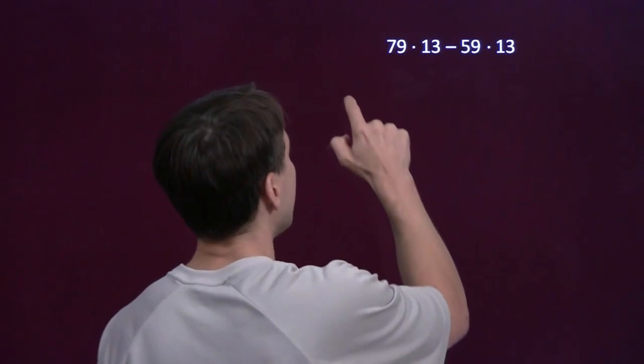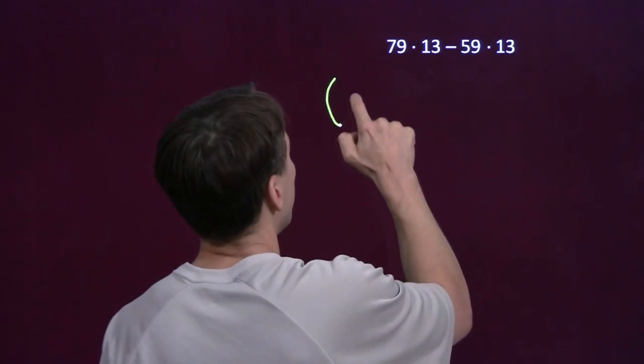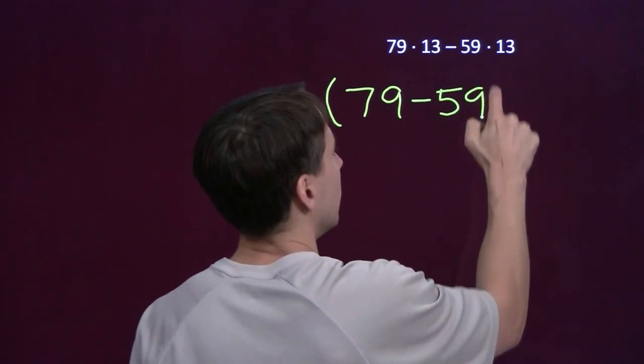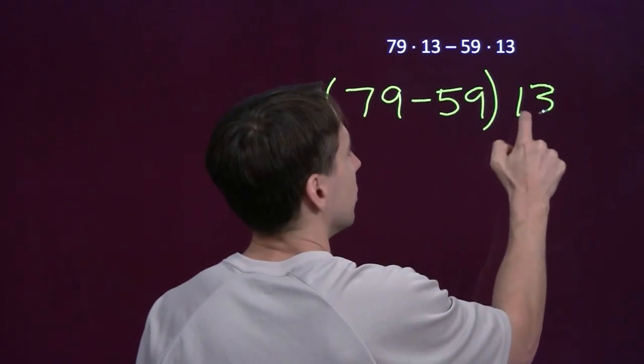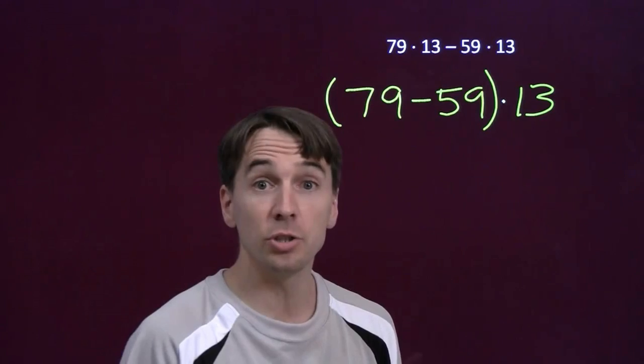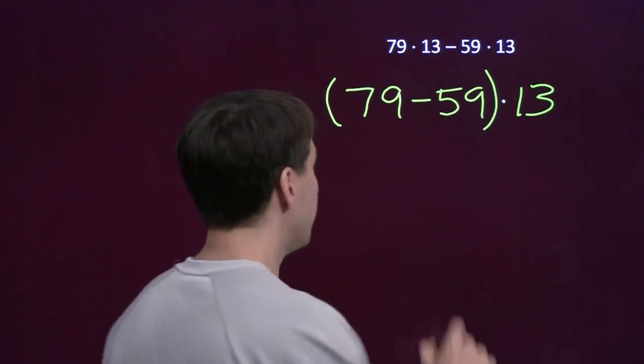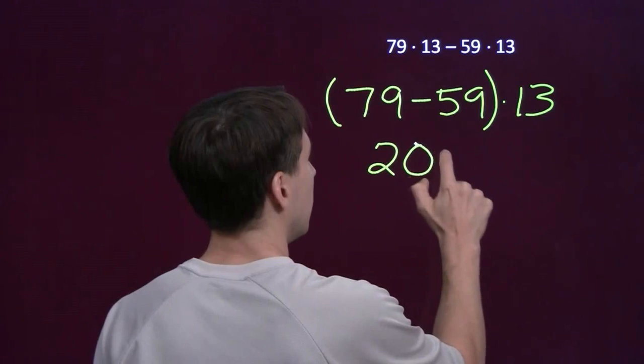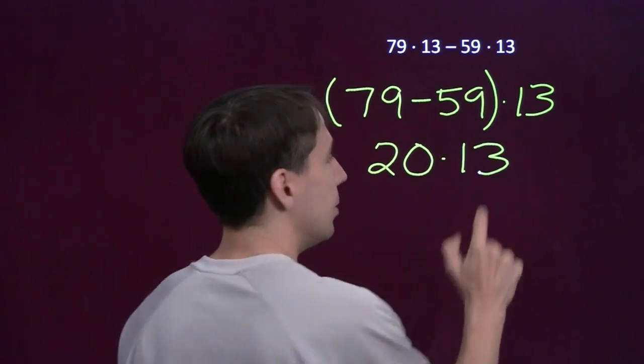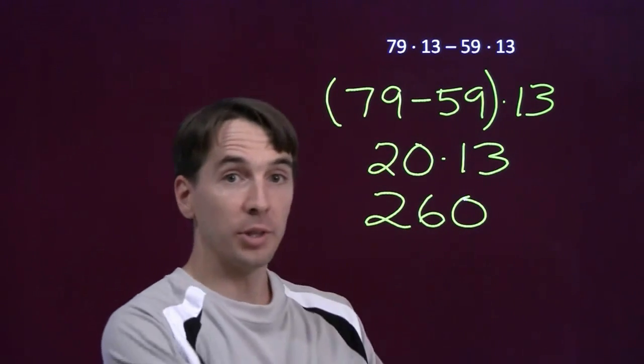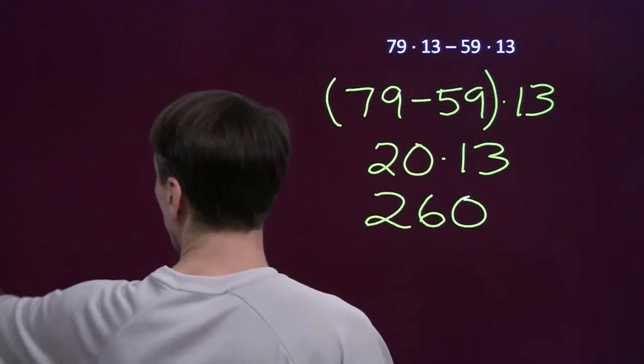Thirteen's in both of them. We can use the distributive property. We can factor out the thirteen. We can take out that thirteen and write this as seventy-nine minus fifty-nine times thirteen. And all we're doing there is using the distributive property. We're factoring out the thirteen. Seventy-nine minus fifty-nine, well, that's twenty. So our problem is now twenty times thirteen, and that is easy. That's two hundred and sixty. And we're done with that. Ready to go to the next problem.